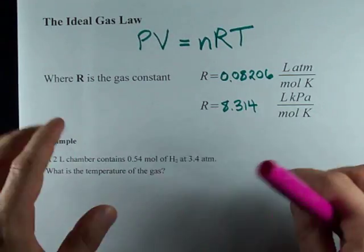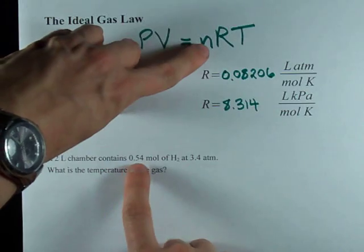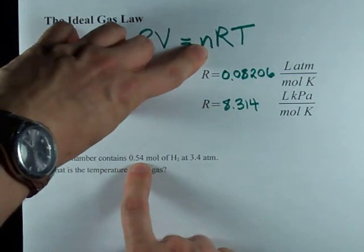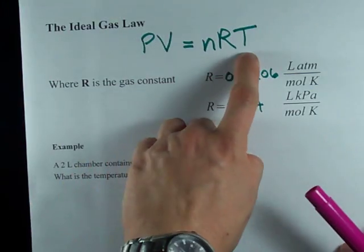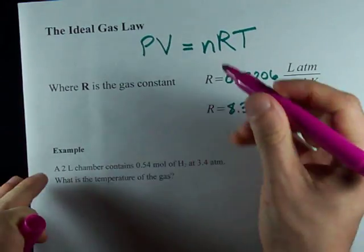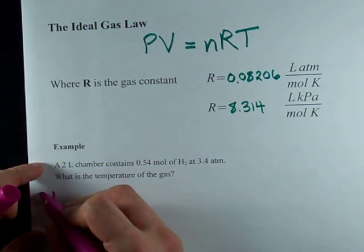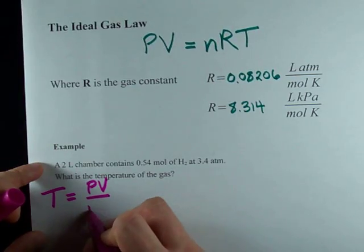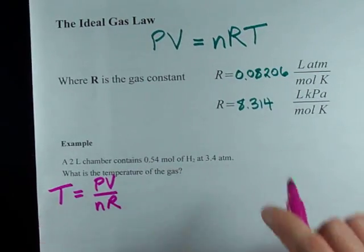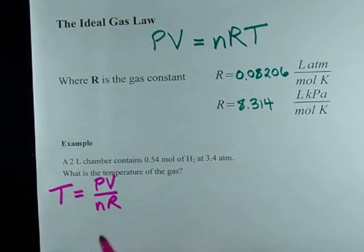Well, you can simply fill in 3.4 times 2 equals 0.54 times R times T, but I'm going to show you that we can rearrange this equation. In fact, if I have N and R multiplied by T on the right, to solve for temperature, I just take the left-hand side and divide it by N and R. Undo multiplying by N-R by dividing by N-R on the other side.